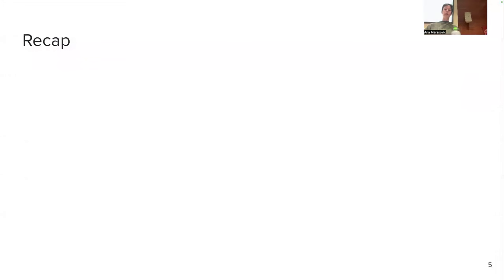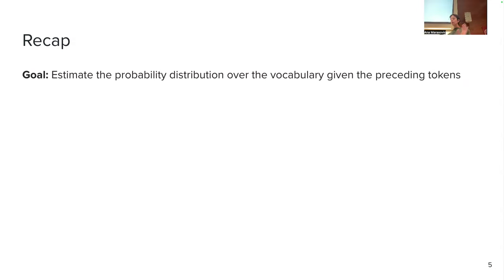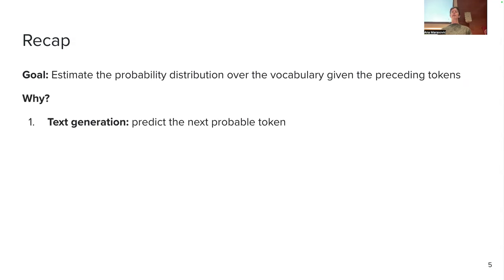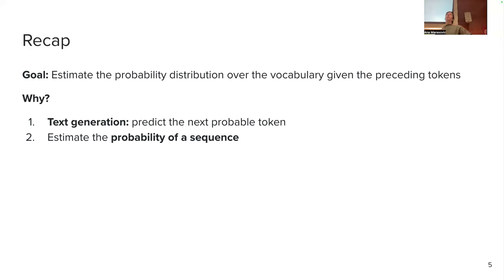We'll start with neural language modeling. The goal was to estimate the probability distribution over the vocabulary given some preceding tokens. If we can have a probability distribution over our vocabulary, we can predict what the next token could be — and this is basically text generation. You're all aware of how powerful text generation can be given ChatGPT, which is literally a text generation system.